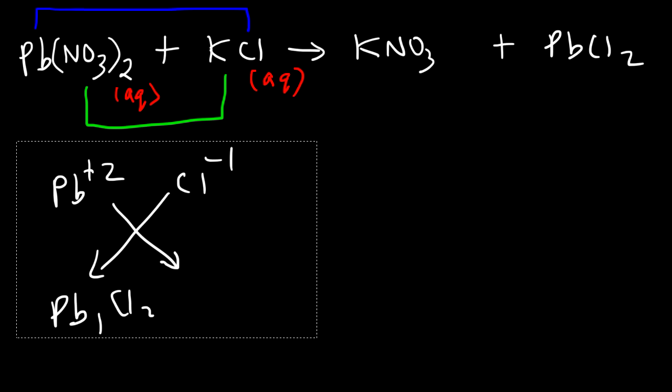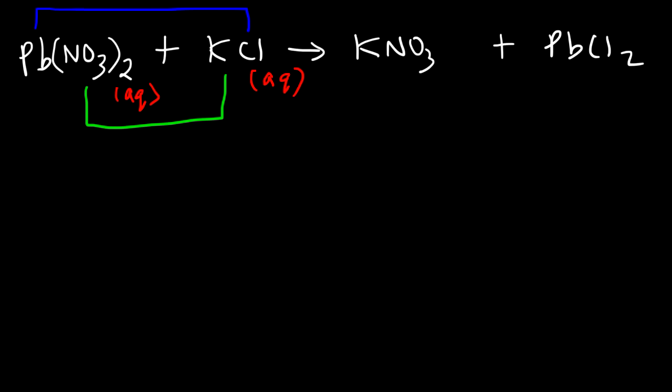Now we need to write the phases of the products. Potassium nitrate, is it soluble or insoluble? So hopefully you're familiar with your solubility rules. Nitrates are always soluble. So therefore this is going to be an aqueous phase. Now what about lead 2 chloride? Does that dissolve in water or is it insoluble in water? Lead 2 chloride is insoluble.